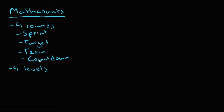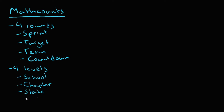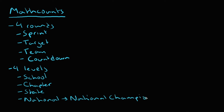At each level, players go through a full MathCounts competition and most do all four rounds. Those levels are: the school round, where players from one school compete to make the school team and advance to the chapter round; the chapter round, where teams from different schools in one local area compete; the state round, which is like the chapter round but across the whole state; and then the national round, where the winning state teams advance and the winner is crowned national champion.